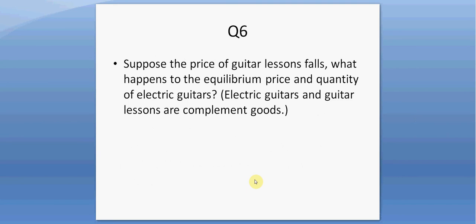Suppose the price of guitar lessons falls. What happens to the equilibrium price and quantity of electric guitars? The clue is that electric guitars and guitar lessons are complement goods. So if the price of guitar lessons falls, it's going to be more appealing for people to want to pick up and play guitar, so the demand for electric guitars increases, raising its price and raising its equilibrium quantity.